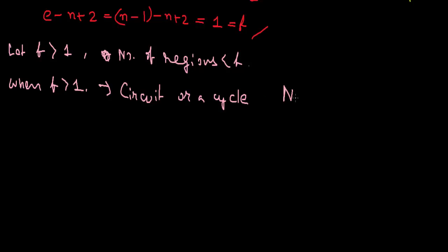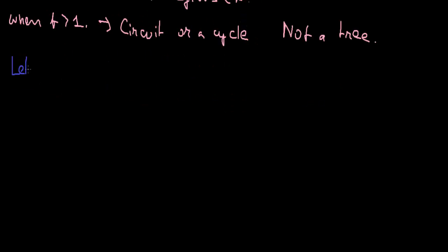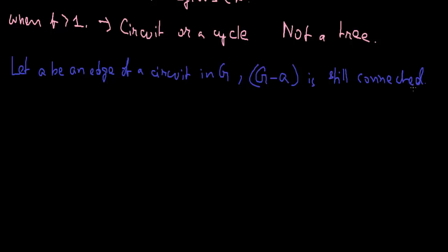The graph is not a tree. Let A be an edge of a circuit in G. If we remove A, so G minus A is still connected and also planar.